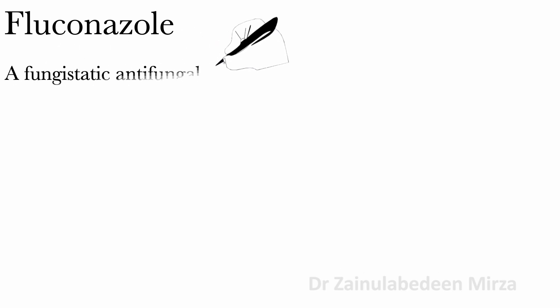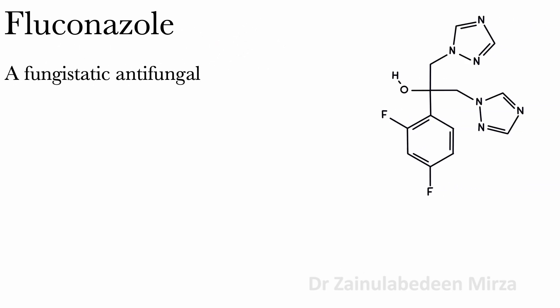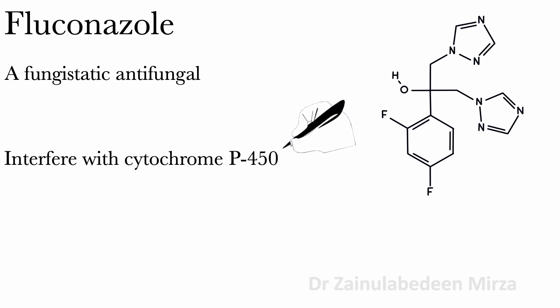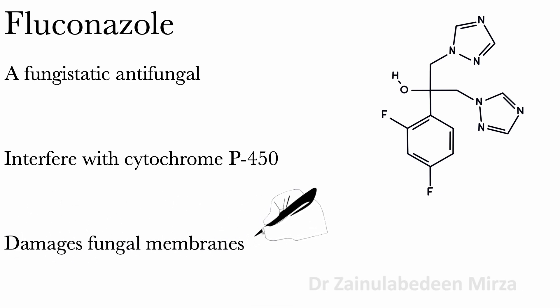Fluconazole is a fungistatic antifungal that interferes with cytochrome P450, an enzyme necessary for ergosterol formation. Fluconazole damages fungal membranes, altering their function. Fluconazole works by stopping the growth of certain types of fungus.